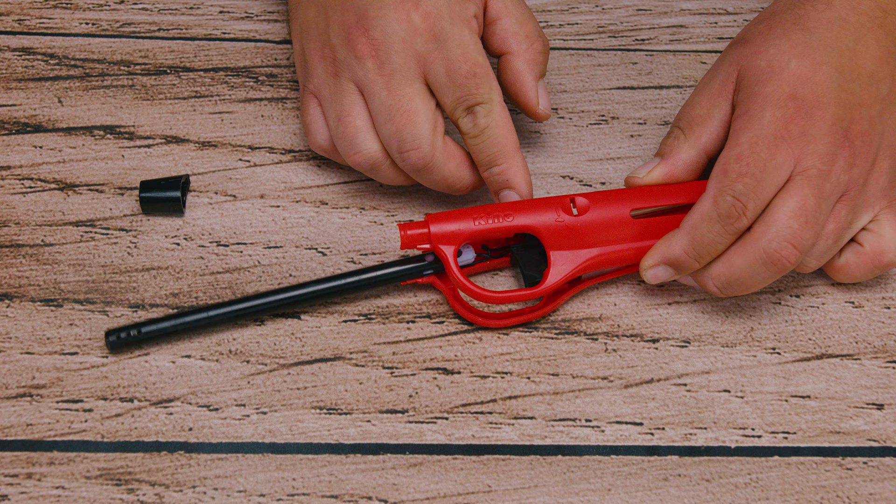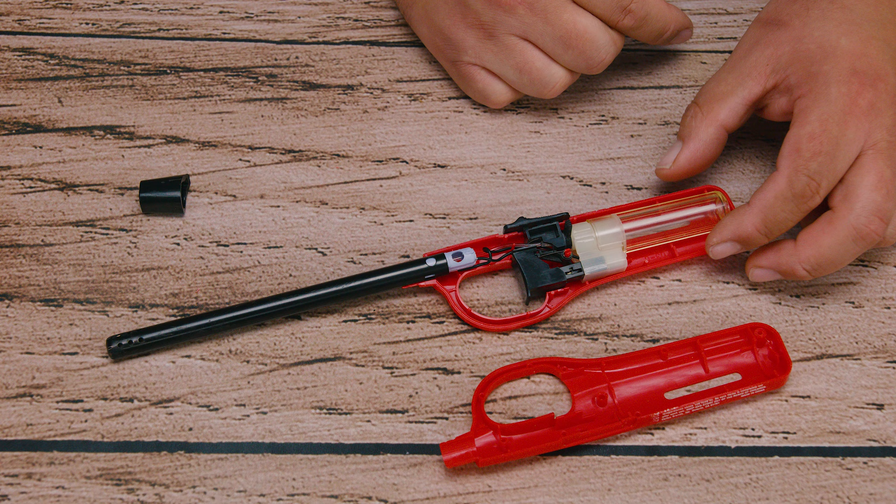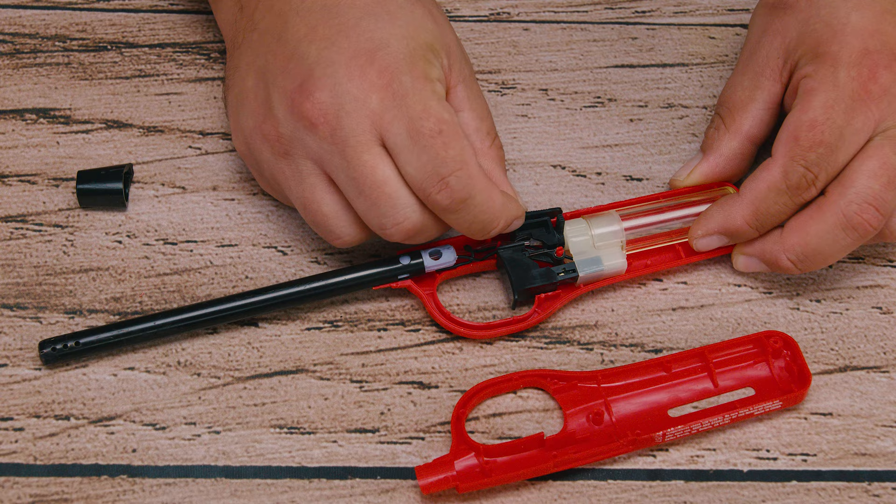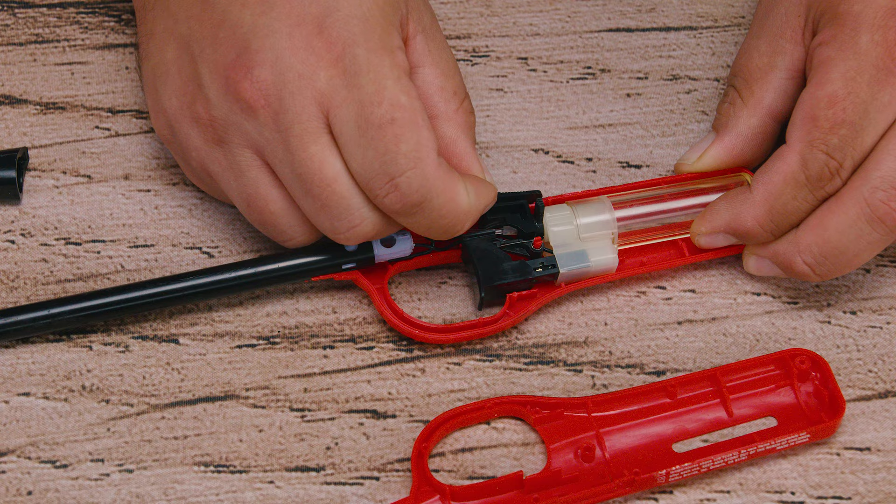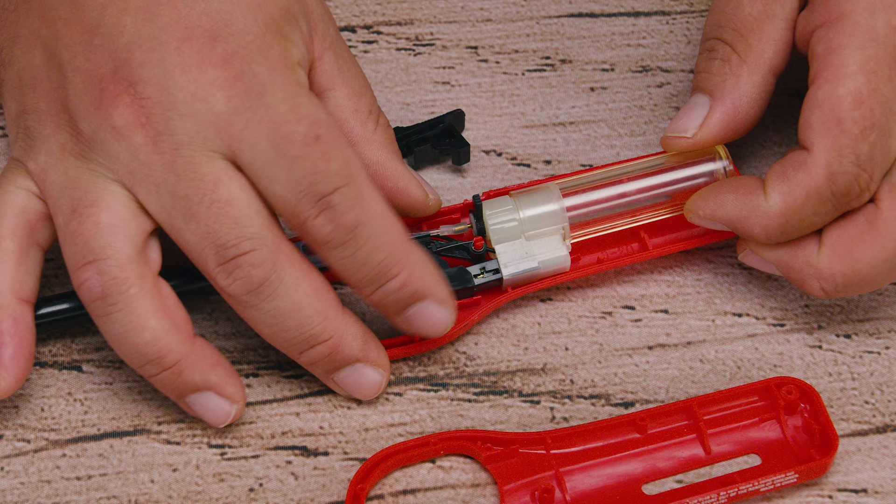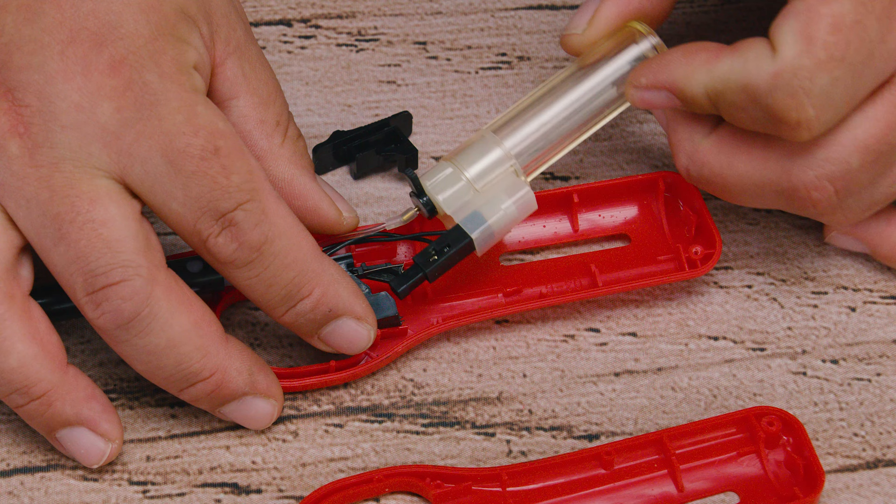Now you should be able to remove the top easily. We remove the locking button placing it to the side the same way we took it out so we can know how to reinstall it. We're going to lift up the reservoir, pull it slightly down so we can remove it from the clicker, and gently remove the tube from the nozzle.